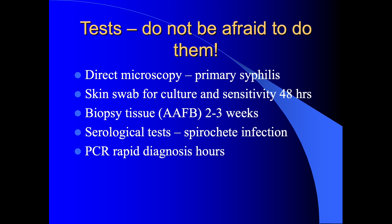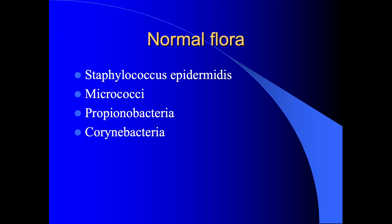Almost as soon as we're born, our skin becomes covered in what is termed the normal flora. The bacteria we tend to get covered in are Staphylococcus epidermidis, Micrococci, Propionobacteria, and some Corynebacteria — these are all parts of the normal flora.